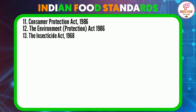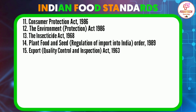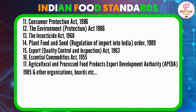The Consumer Protection Act was passed in 1986. The Environment Protection Act was passed in 1986. The Insecticide Act was passed in 1968. The Plant, Food and Seed Regulation of Import into India Order was passed in 1989. The Export Quality Control and Inspection Act was passed in 1963. The Essential Commodities Act was passed in 1955. The Agricultural and Processed Food Products Export Development Authority was established in 1985.